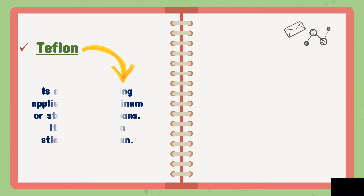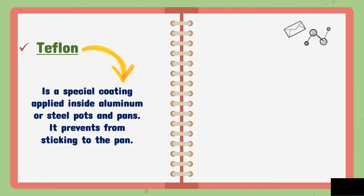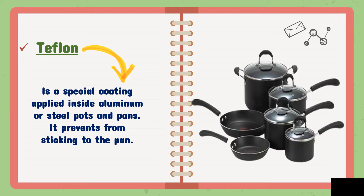Number five is teflon. It is a special coating applied inside aluminum or steel pans. It prevents food from sticking to the pan — this is called a non-stick pan. When frying, you no longer need much oil because it is non-stick, and the food produces its own oil.